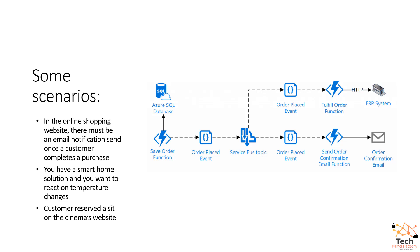Another scenario could be a customer reserving a seat on a cinema website. Once the seat is reserved, we would like to receive an email confirmation. So there are many different scenarios where we can use events and react to those events.